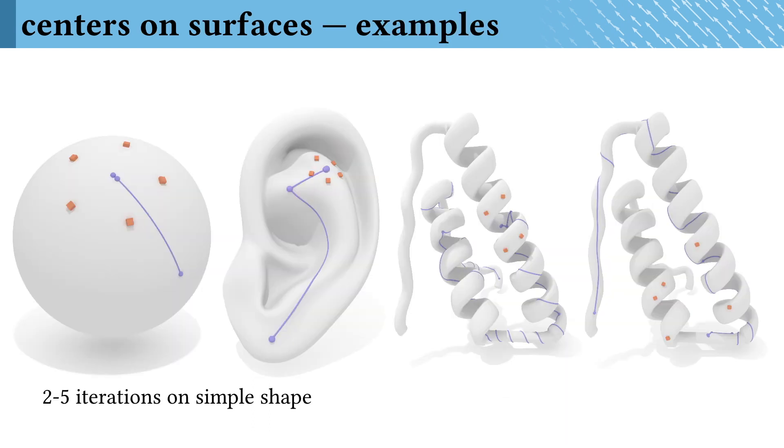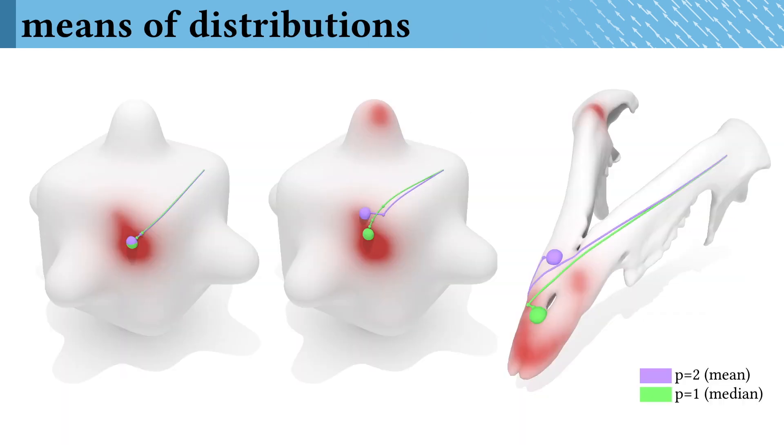On simple shapes, 2-5 iterations is usually sufficient to find a mean with this procedure. On more complex instances, we still see convergence in less than 20 Weiszfeld iterations. We can also find the centers of distributions, as shown here in red, at no additional cost.